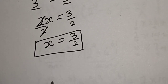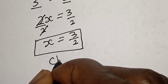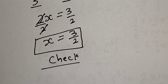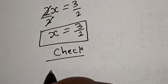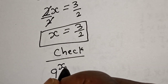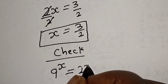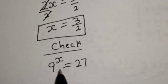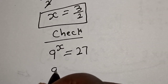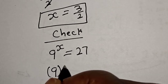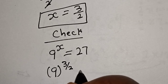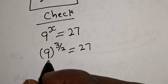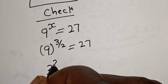Let's check to confirm if our answer is right or wrong. We have the given equation: 9 to the power of s is equal to 27. When s is 3 over 2, this becomes 9 raised to power 3 over 2 is equal to 27. Then 9 can be written as 3 squared.